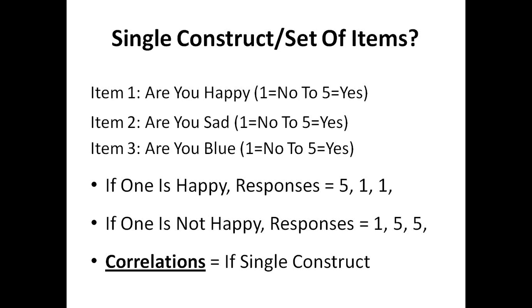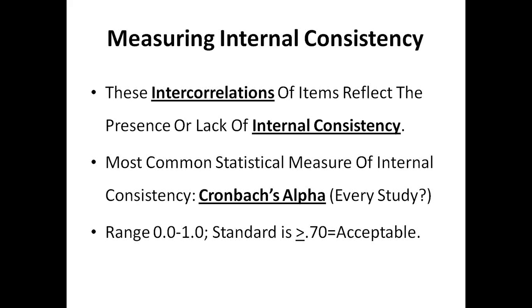Now, let's say that somebody answered: Are you happy? 5, yes. Are you sad? 5, yes. Are you blue? 5, yes. Then we might say this measure doesn't seem to measure anything, because the items don't have a relationship — everything is just 5. It's not measuring happiness because the person is happy, sad, and blue at the same time. So, the inter-item correlations reflect the presence or lack of internal consistency. The stronger these correlations are, the more internal consistency reliability the measure is said to have.